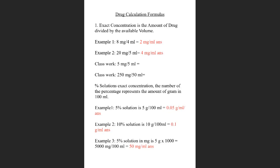Classwork: you have a solution with five milligrams in five mils. What is the exact concentration? The answer is one milligram per mil — five divided by five equals one, and the measurements don't cancel out. Important note: do not put a one before the mil — just write milligram per mil.